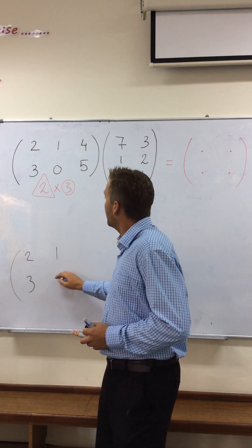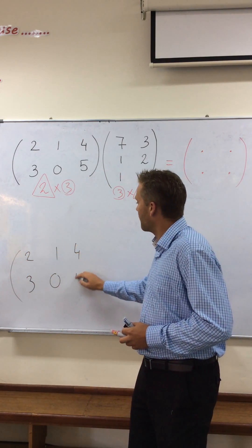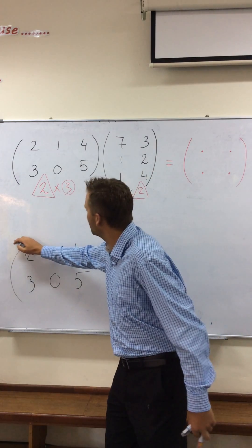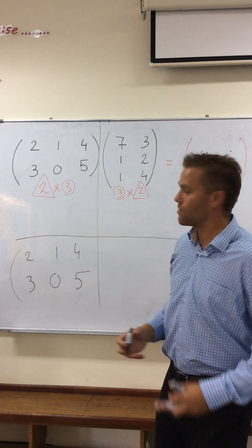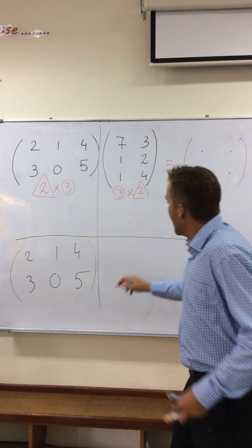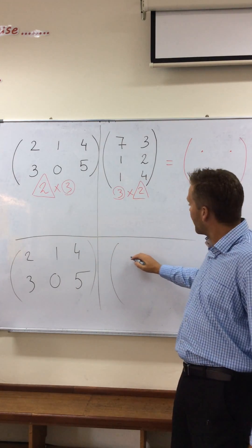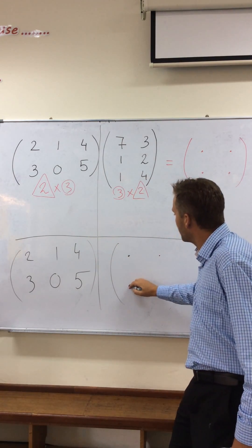Two, one, four, three, zero, five. Look what I'm doing now. I'm going to draw sort of a cross. And my answer is going to appear here. Two by two. So I'm going to put the dots there.